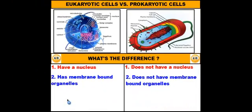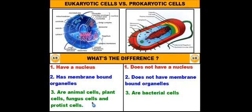The final difference between the two cells lies in where the cells can be found. Eukaryotic cells are going to include all animal cells, plant cells, fungus cells, and protist cells. And the only type of cells on earth that are prokaryotic cells are bacterial cells.